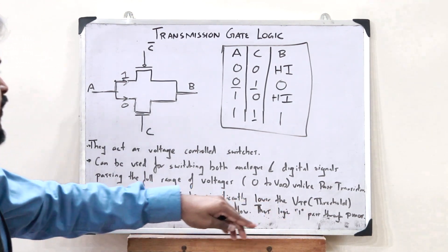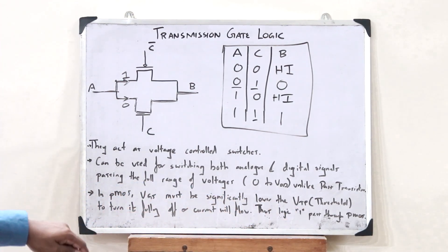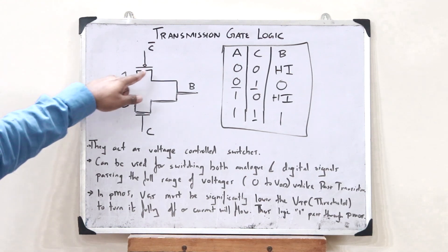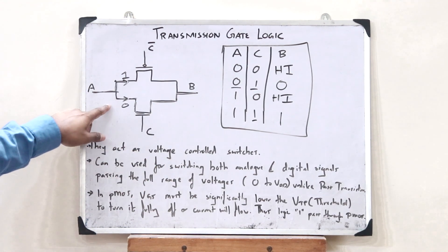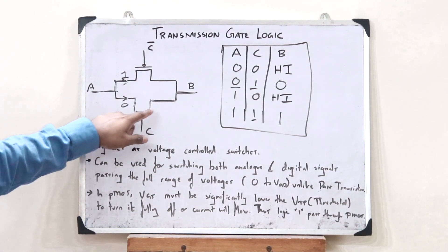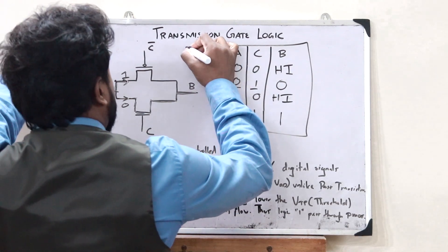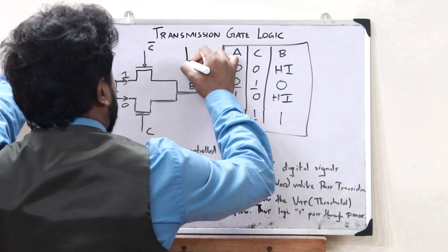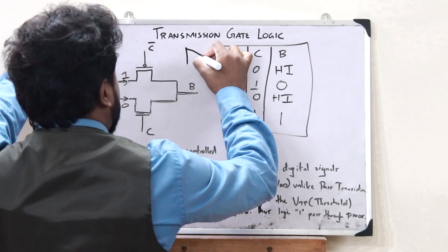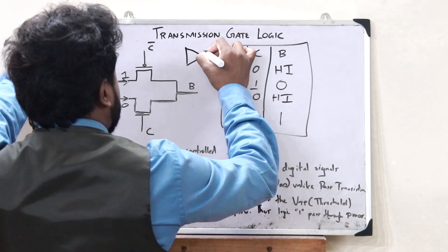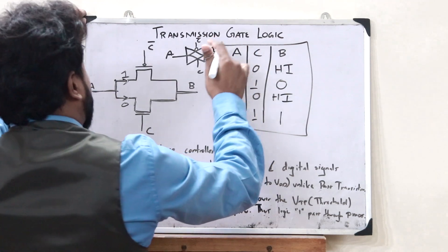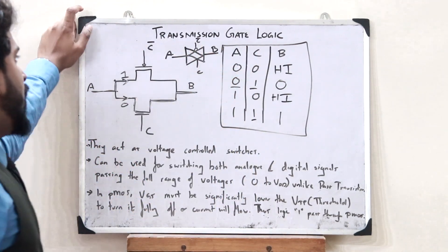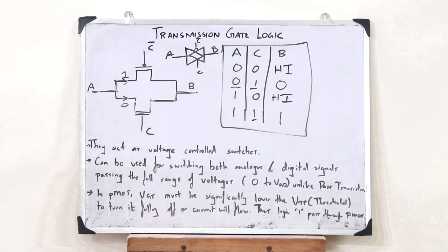Thus, logic 1 will always pass through the PMOS and logic 0 will pass through the NMOS. A transmission gate is represented by a specific symbol — this is the symbol of a transmission gate.